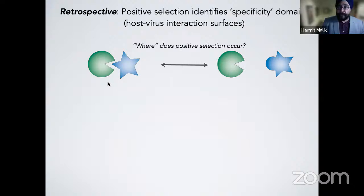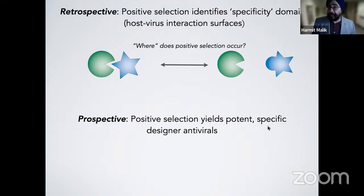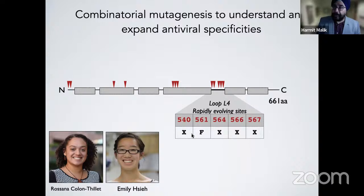So far I've shown how we use evolution to look backward and identify the interaction interface by asking where positive selection occurs. I'd now like to describe what we can do with a prospective approach — looking forward in evolution with the same playbook that evolution has given us — to design specific antivirals. We go back to MXA and Loop L4, where we saw all the rapid evolution. Recall that residue 561 is completely essential, and later work showed it needs to be a phenylalanine, tryptophan, or tyrosine — hydrophobic aromatic residues critical for binding a hydrophobic cleft in the viral protein.